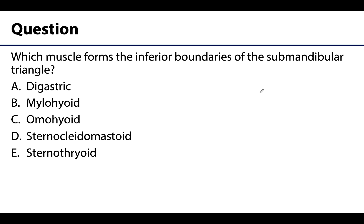The question is: which muscle forms the inferior boundaries of the submandibular triangle? Is it A) digastric, B) mylohyoid, C) omohyoid, D) sternocleidomastoid, or E) sternothyroid? The correct answer is A, the digastric muscle.